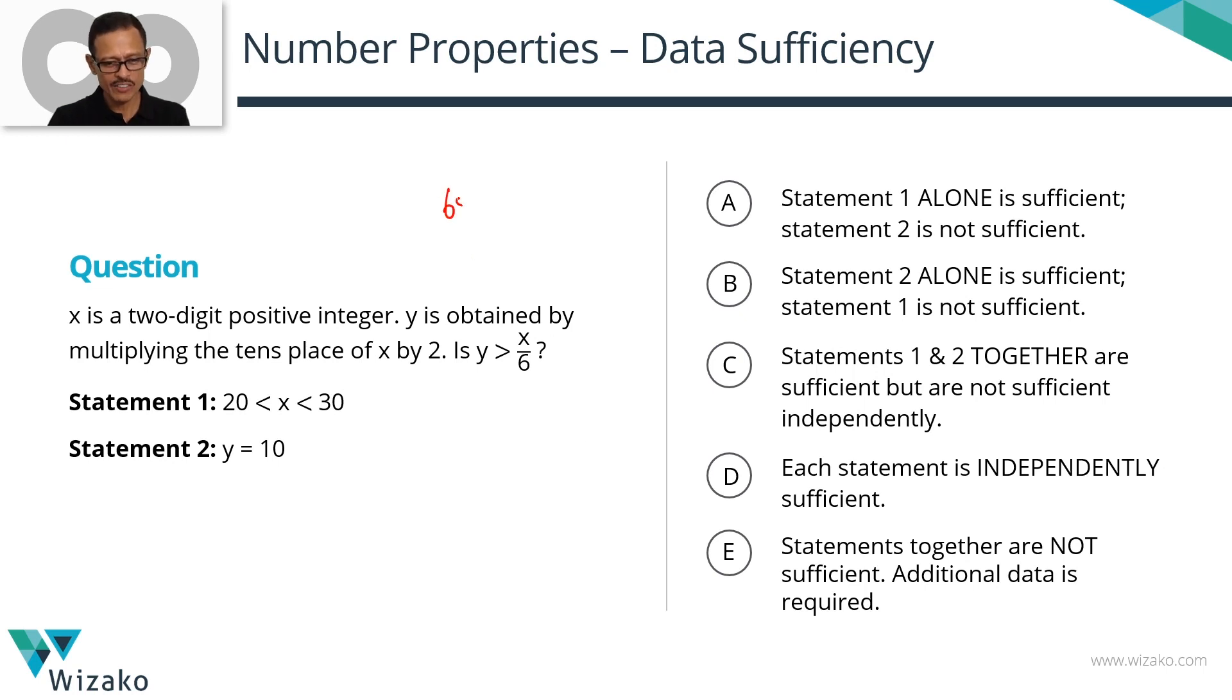This is a GMAT 650 level number properties data sufficiency question, a number properties number line kind of question. Let's get started.